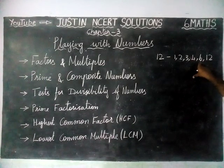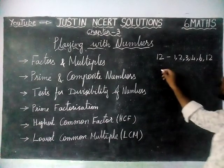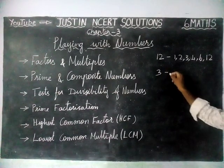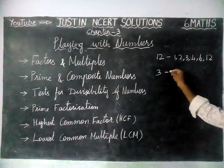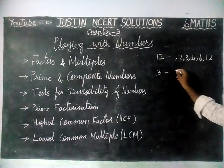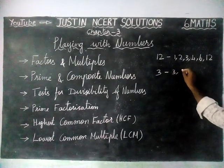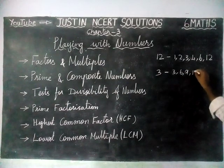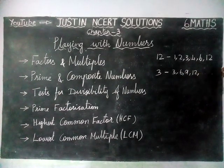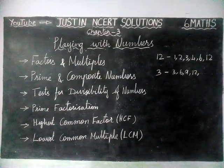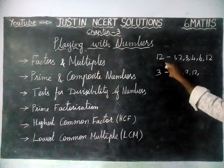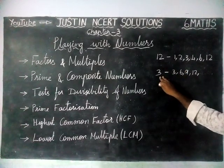And next one, multiple. For example, if we are taking 3, the multiplication table which we are following is the multiples of 3. 3 ones are 3, 3 twos are 6, 3 threes are 9, 3 fours are 12 — and so on. Factors are finite. Multiples are infinite.